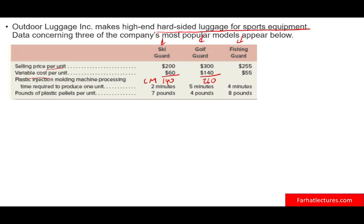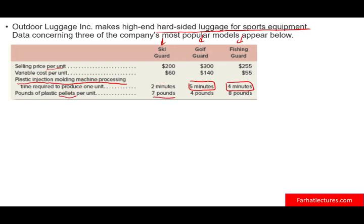The contribution margins are $140 (Ski Guard), $160 (Golf Guard), and $200 (Fishing Guard) — that's sales minus variable cost. Now, to produce these hard-sided luggage pieces, we need plastic injection molding machine processing time. The time required is two minutes for the Ski Guard, five minutes for the Golf Guard, and four minutes for the Fishing Guard. We also need pounds of plastic pellets per unit: seven pounds for the Ski Guard, four pounds for the Golf Guard, and eight pounds for the Fishing Guard. These are the resources — the factors of production — to manufacture those hard-sided luggage pieces.